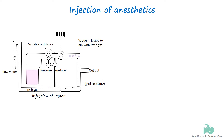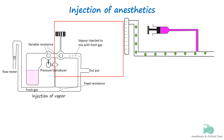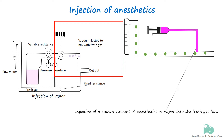The diagram on the left shows the complex design used in the TEC-6 Desflurane Vaporizer, which is an injection type of vaporizer. The diagram on the right is the simplified version to show how, by injecting a known amount of anesthetic vapor into the gas stream, the desired concentration of output can be achieved. We will discuss this complex diagram when we cover the Desflurane Vaporizer.